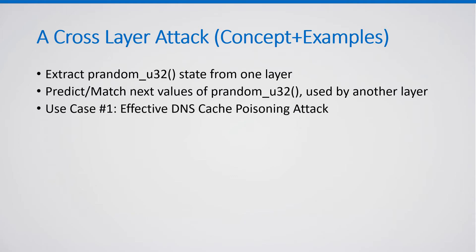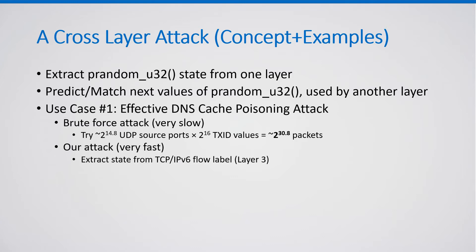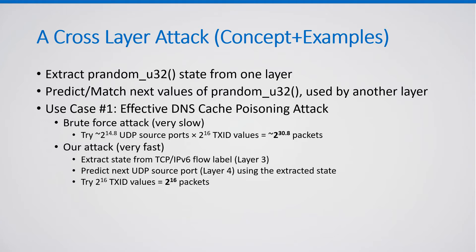Our first use case is an effective DNS cache poisoning attack. In a straightforward brute force attack, the attacker tries all combinations of over 28,000 UDP source ports with 64k DNS transaction IDs — a total of almost 2 billion packets. With our attack, the attacker extracts the pRandomU32 state from the TCP-IPv6 flow label field at layer 3, and with this state can predict the next UDP source port at layer 4 used for the DNS query, so the attacker has to go over only 64k DNS transaction IDs — a total of only 64k packets.